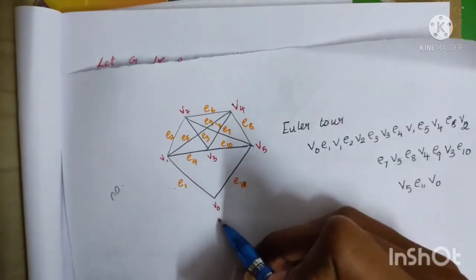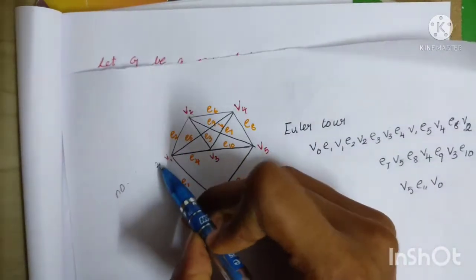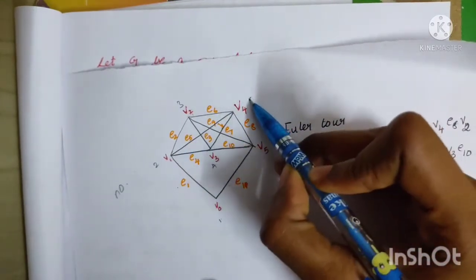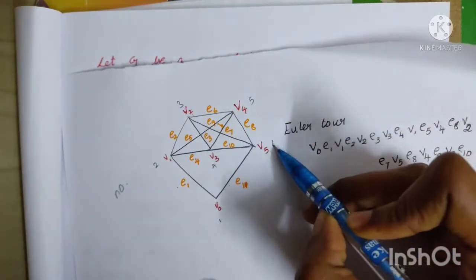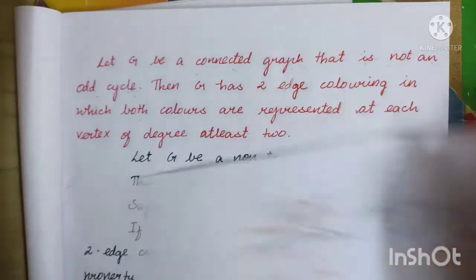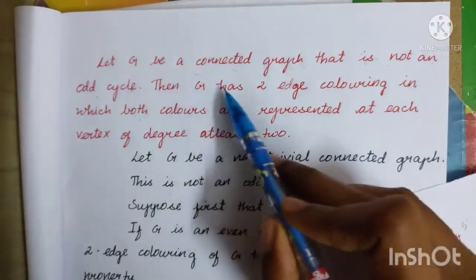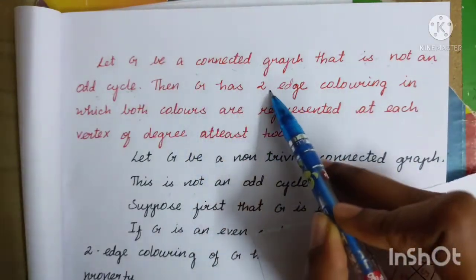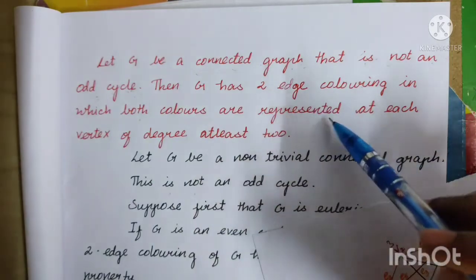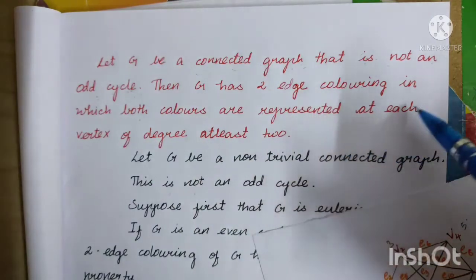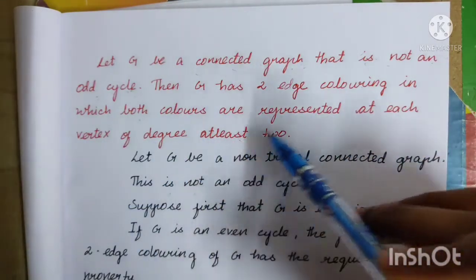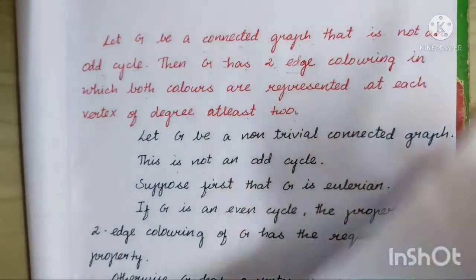This even cycle has 1, 2, 3, 4, 5, 6 vertices. Then G has a two-edge coloring in which both colors are represented at each vertex of degree at least two. First, edge coloring.